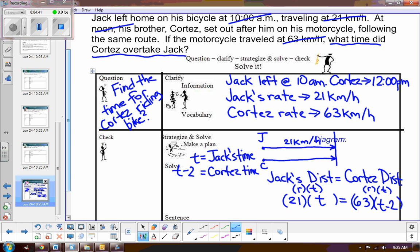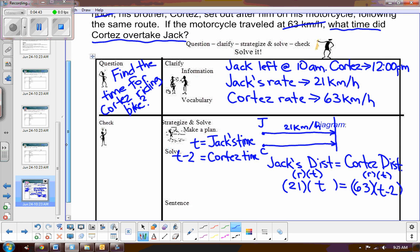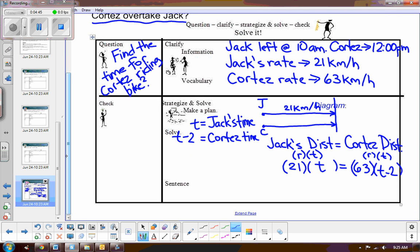Now we have an equation, and now we can solve for time. You've done the hard part about this problem. The solving actually is not so bad. So we get 21T equals 63T minus, remember distributor property, 63 times 2 is 126.